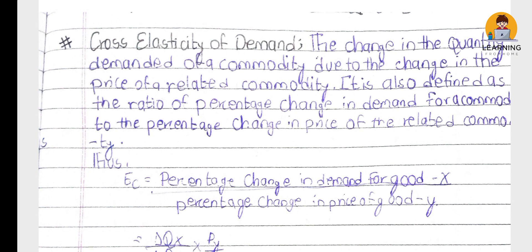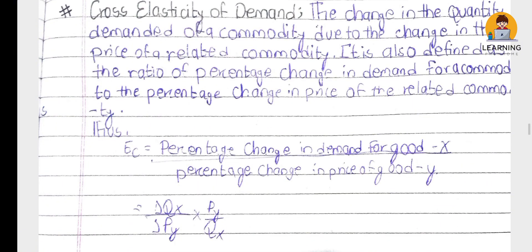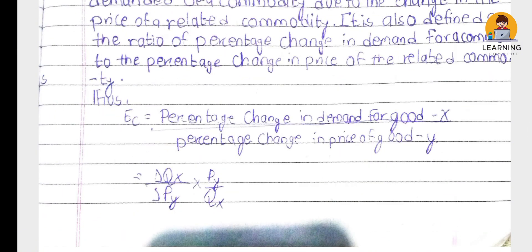Cross elasticity of demand is defined as the ratio of percentage change in the demand for commodity X to the percentage change in the price of related commodity Y. The formula is: percentage change in demand for good X divided by percentage change in price of Y, which equals delta QX by delta PY into PY by QX.